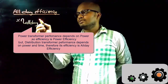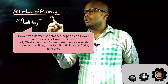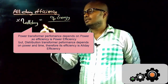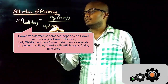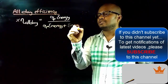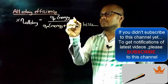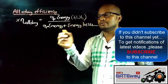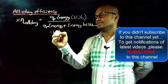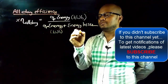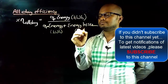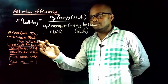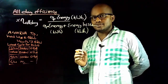All-day efficiency is represented as output energy divided by output energy plus energy losses, where all quantities are in kWh. Now let's understand this with a numerical example, for which we need to find the percentage all-day efficiency.